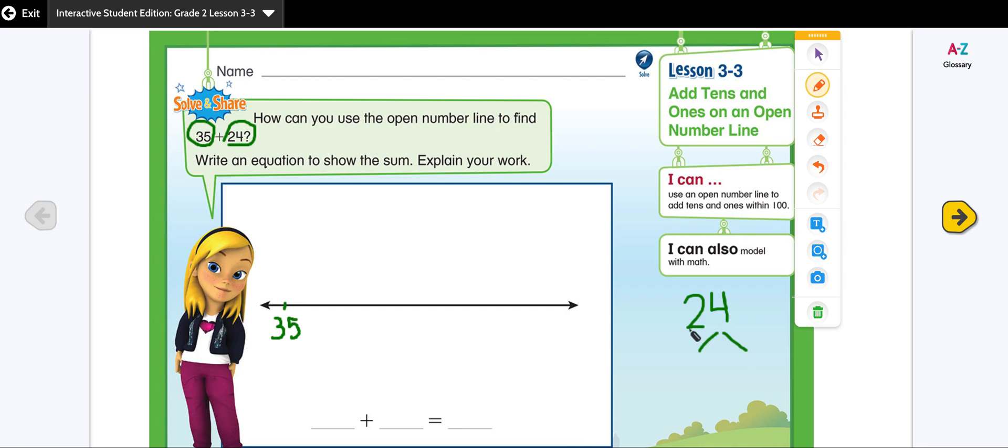So I have two tens, that means I have 20. And I have four ones, that means I have four. 20 plus 4 equals 24.